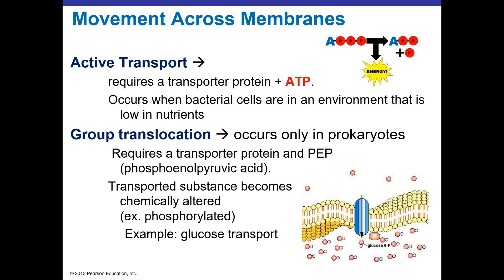Bacteria also perform a unique process called group translocation, which occurs only in prokaryotes. Similar to active transport, it requires a transporter protein, but instead of ATP it uses a metabolic intermediate — PEP, phosphoenolpyruvic acid — to tag something like glucose once it gets across the membrane. The substance is transported into the cell and then chemically altered — in this case, phosphorylated — to become glucose-6-phosphate. It's now a different substance, so it no longer maintains that concentration gradient.